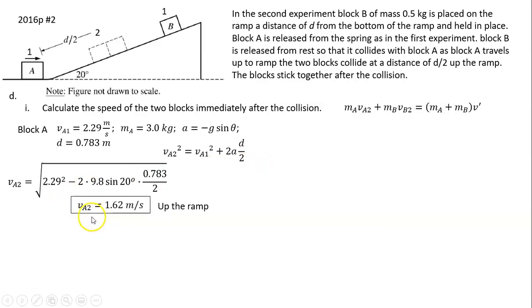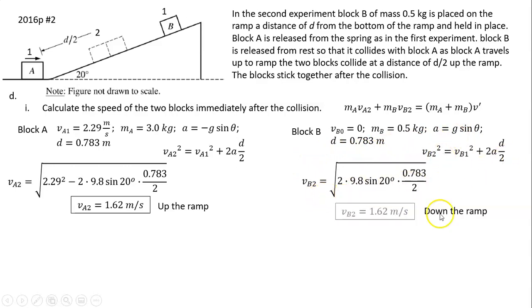Similarly, we can find the speed of block B. For block B, its initial speed is zero, its acceleration in this case is positive because it's speeding up. We use the same equation. Plug in the numbers. Block B has the same speed but it is moving down the ramp, so the two blocks have a head-on collision.